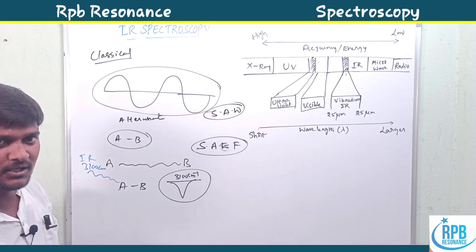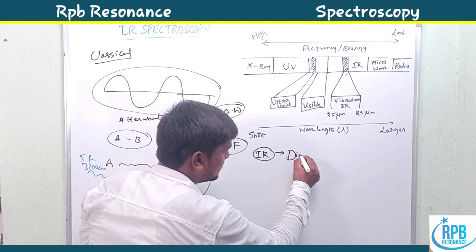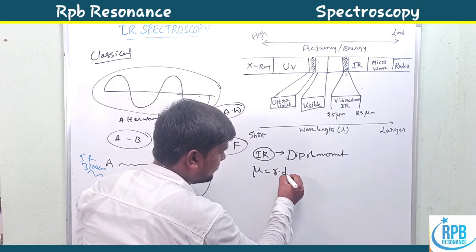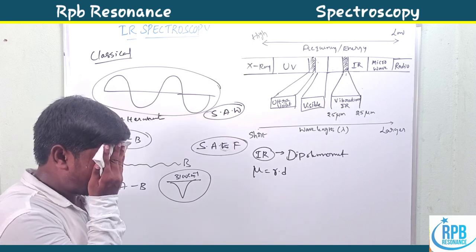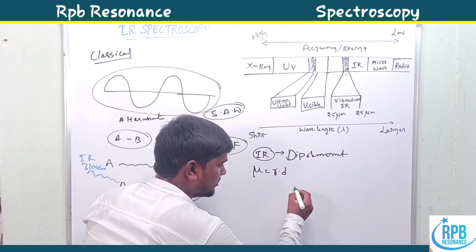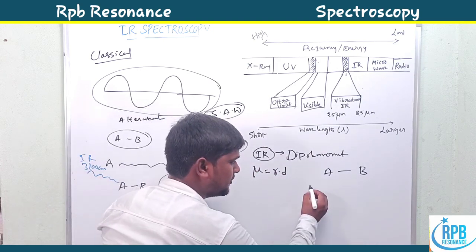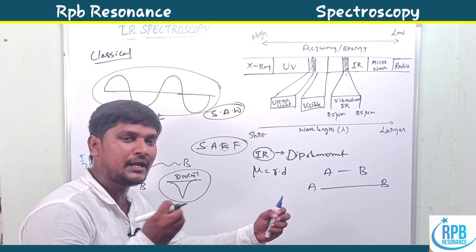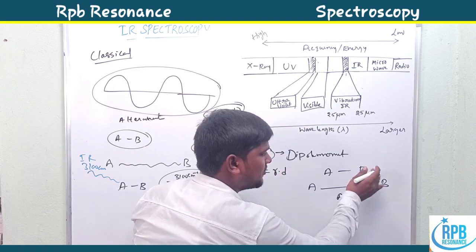IR spectroscopy mainly depends upon the dipole moment. Dipole moment mu is equal to R into D — it is the distance and direction of the magnitude of the molecule. When IR radiation falls on the molecule AB, the molecule can vibrate — it may be elongated or compressed.